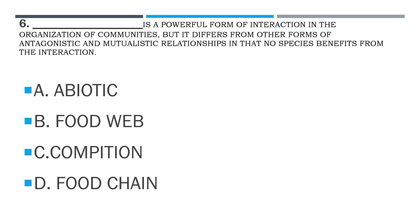Number 6. Blank is a powerful form of interaction in the organization of communities, but it differs from other forms of antagonistic and mutualistic relationships in that no species benefits from the interaction. A. Abiotic. B. Food Web. C. Competition. D. Food Chain.